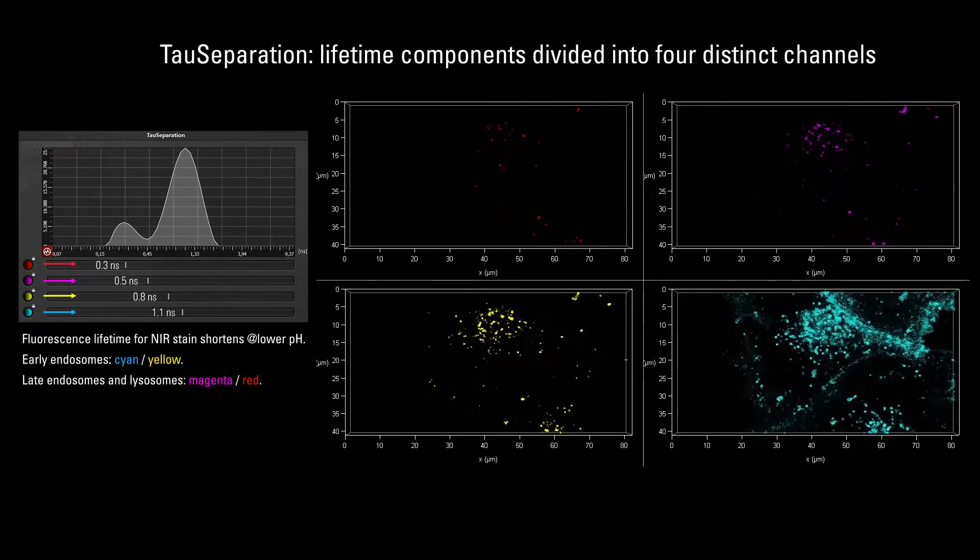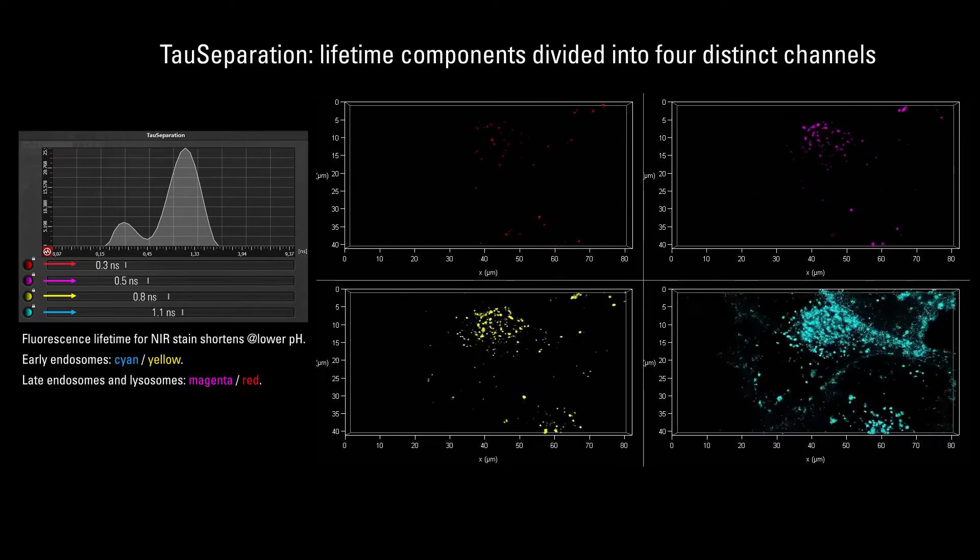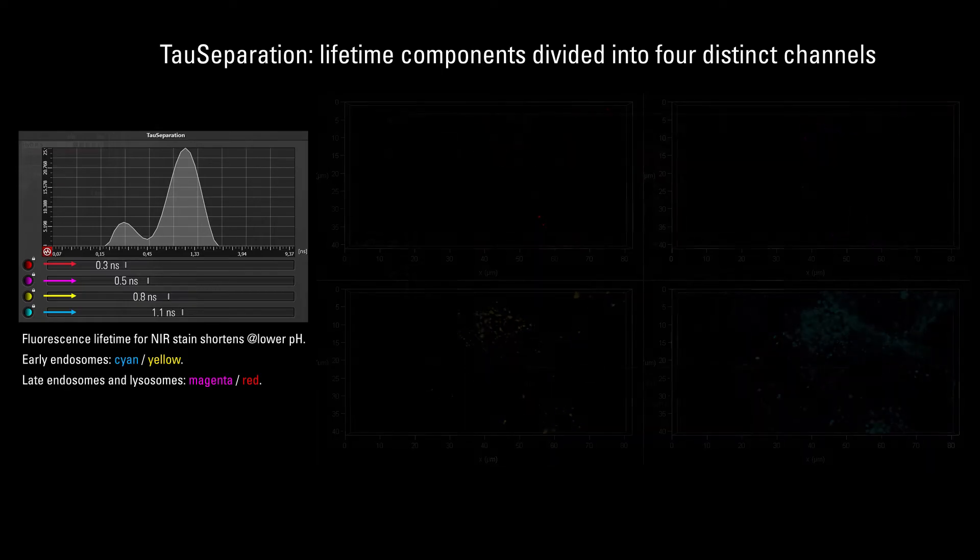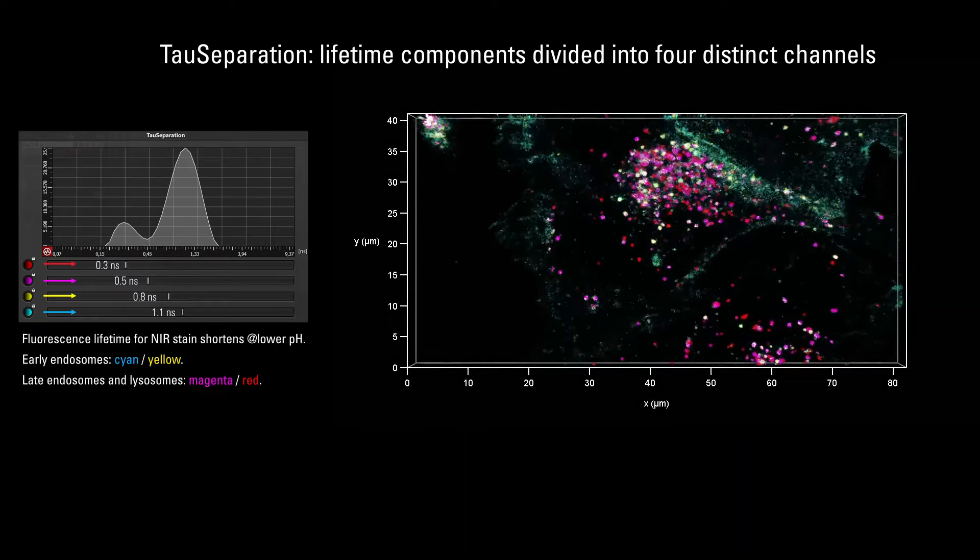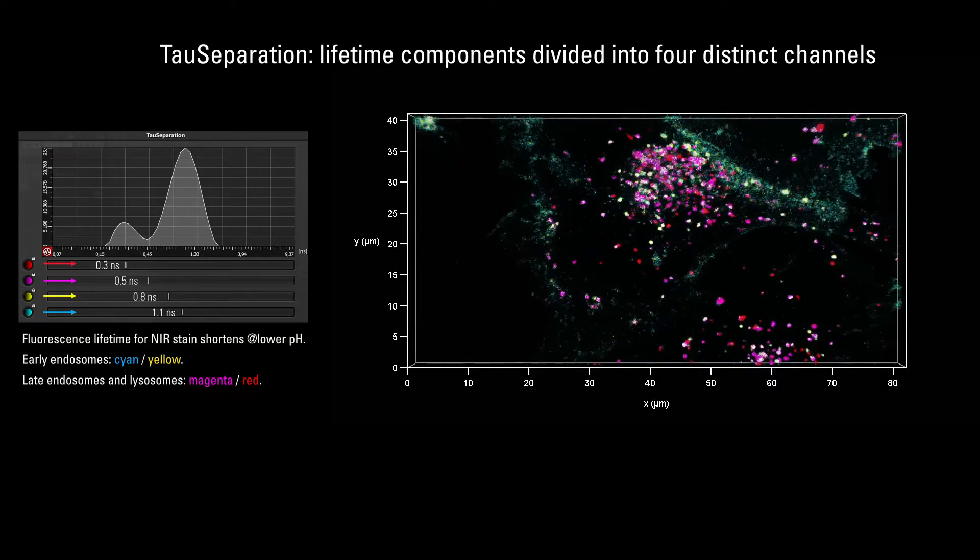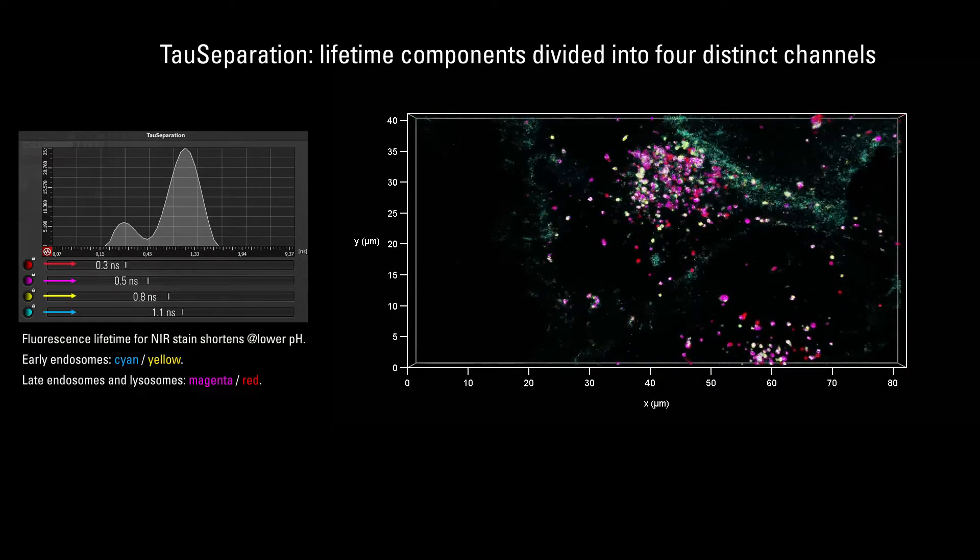Here is how this mapping of the lifetime dimension looks like with this extra layer of detail. We can then overlay the channels, and we now see the vesicles in different colors, which correspond to different functional states.